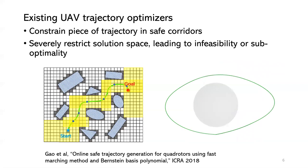Another kind of method constrains pieces of the trajectory inside a safe corridor. The left picture illustrates their method — each piece of trajectory is inside a yellow box, so their method is always safe. However, that kind of method restricts the solution space and may lead to infeasibility or suboptimality. As the red picture shows, their green trajectory is much longer than expected.